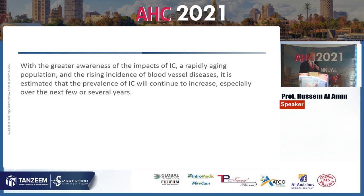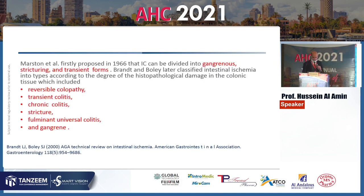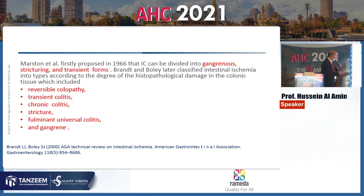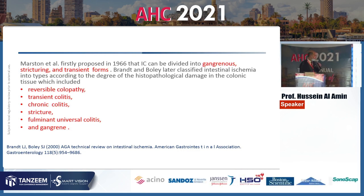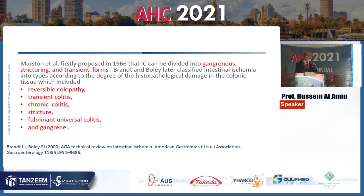The classification of colonic ischemia includes gangrenous ischemia, gangrenous structuring, and transient forms. Histopathologically, types include reversible colopathy, transient colitis, stricture, fulminating colitis, universal colitis, and gangrene. Another classification uses type 1 for mucosal affection, type 2 for muscularis mucosa affection, and type 3 for transmural affection.